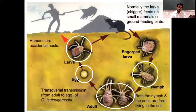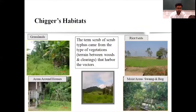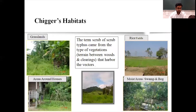This is the life cycle: the larvae or chigger feeds on small mammals or ground-feeding birds. The engorged larvae enters development into an adult, which releases eggs that again infect humans — it's a cyclical process. Common chigger habitats include grasslands, rice fields, moist areas, and areas around the house with shrubs.